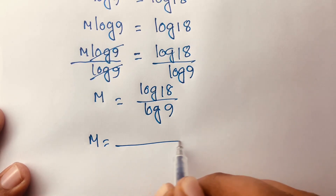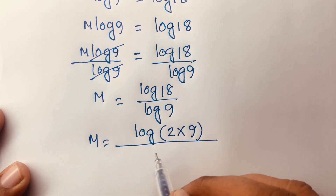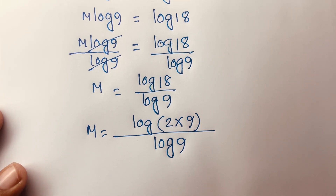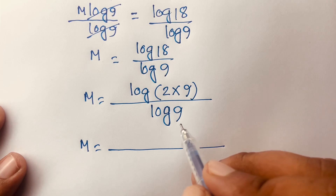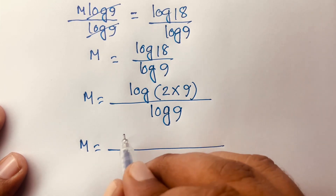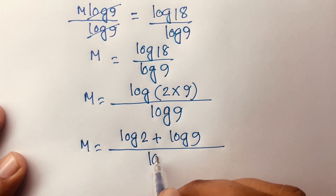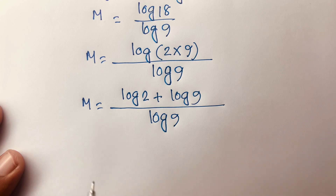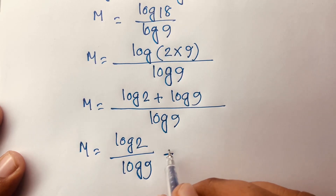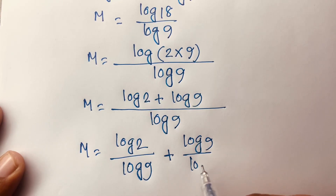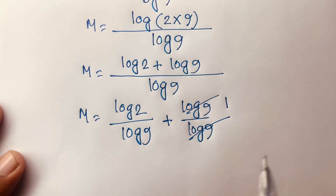Now, m equals log 18 over log 9. I expand log 18 using the rule log(ab) = log a + log b, so log 18 becomes log 2 plus log 9. This gives m equals (log 2 + log 9) over log 9. The log 9 terms cancel, leaving m equals log 2 over log 9, plus 1.